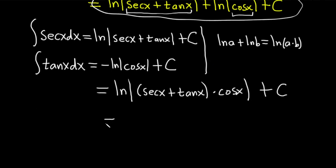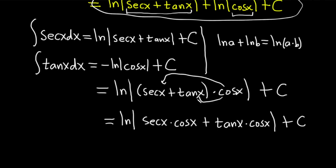So this is equal to the natural log of the absolute value, and secant is 1 over cosine, but I'm going to go ahead and distribute it. So it'll be secant x times cosine x plus tangent x times cosine x. So all I did there was just basically distribute the cosine. Secant times cosine looks okay. Tangent times cosine looks okay. All is good.